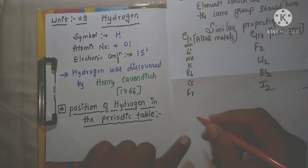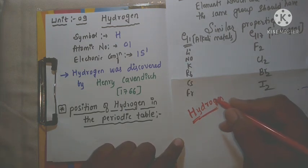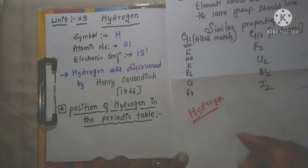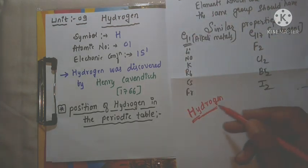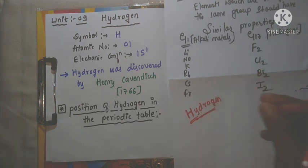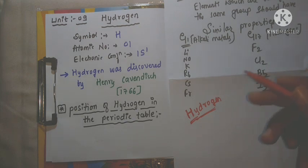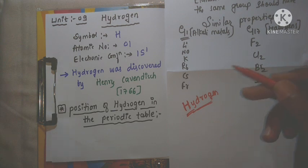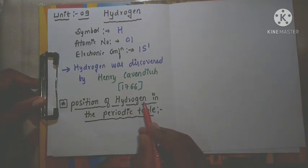After the discovery of hydrogen, we need to determine in which group to place it. The hint is that hydrogen should be kept in the group whose elements show similar properties to hydrogen. For example, if hydrogen shows similar properties with the first group elements, keep it in the first group. If it shows similar properties with the 17th group, keep it there. So we must compare hydrogen's properties with all the groups. First, we will compare hydrogen with the alkali metals.